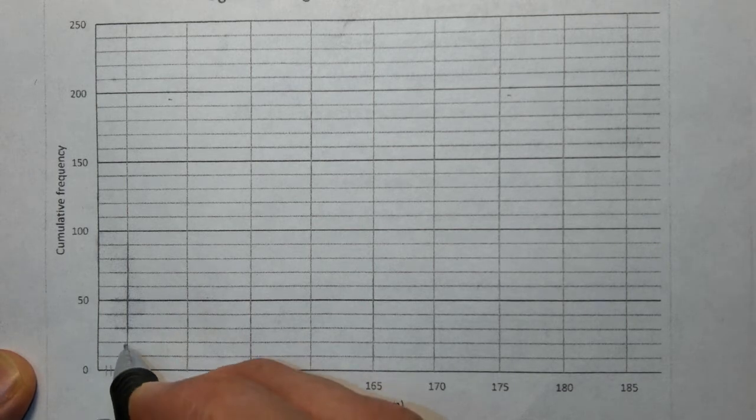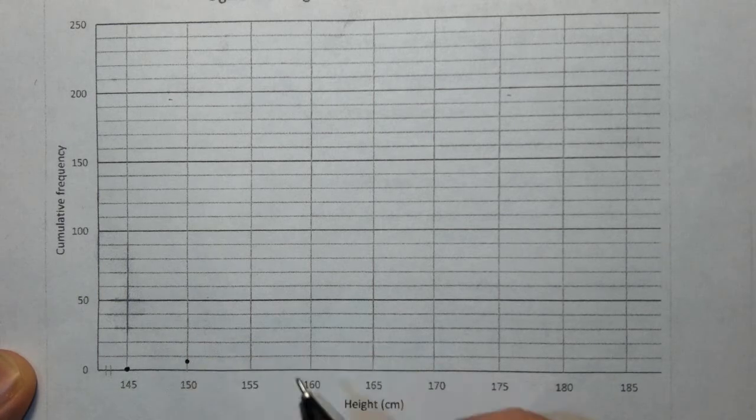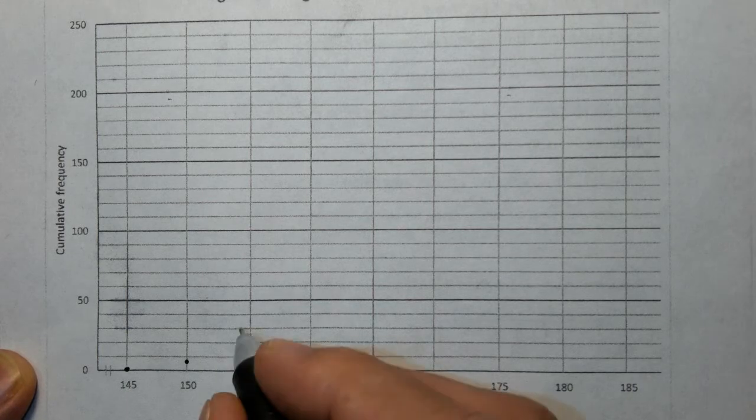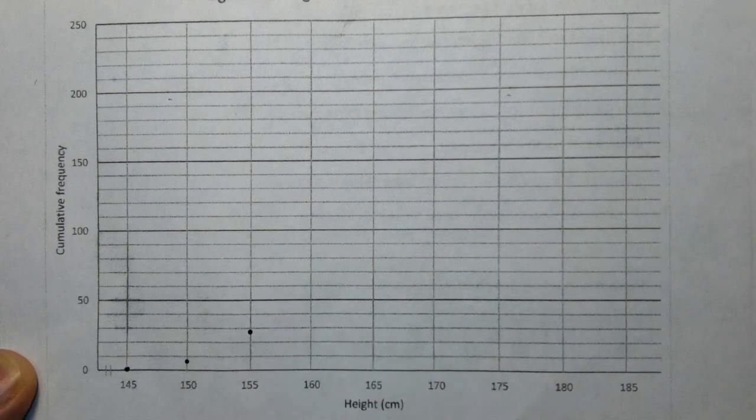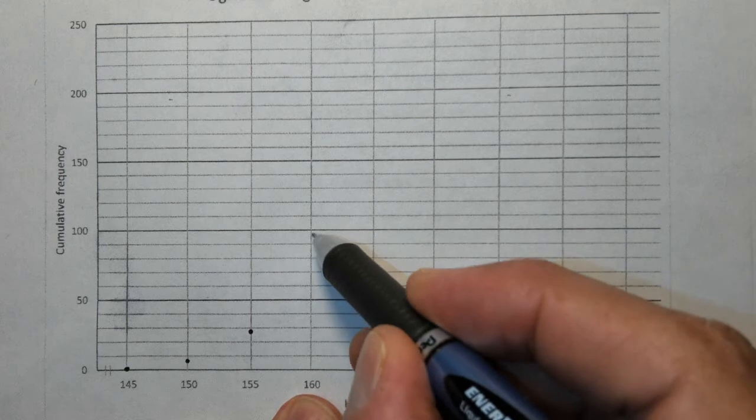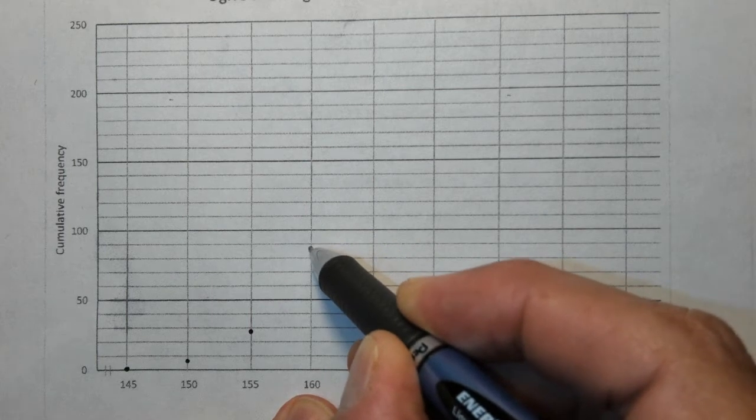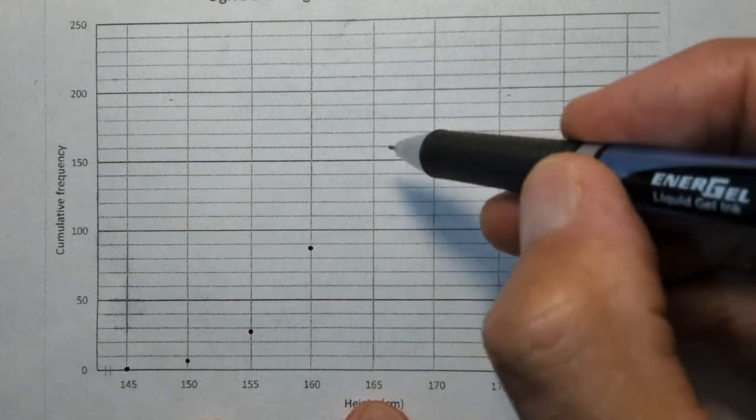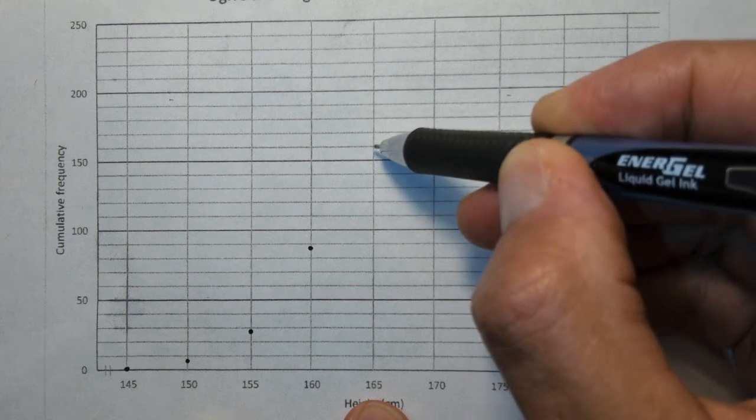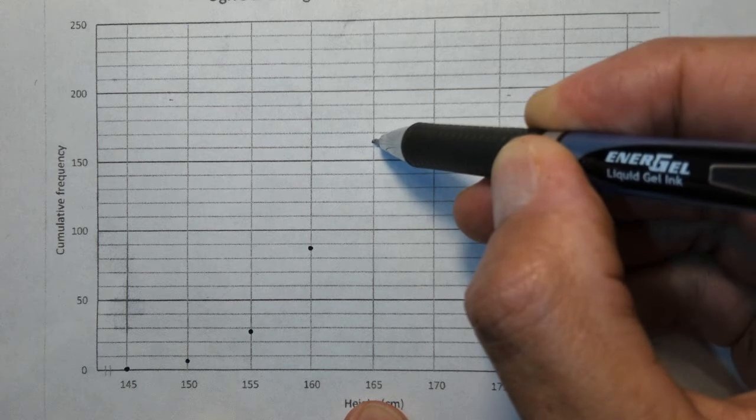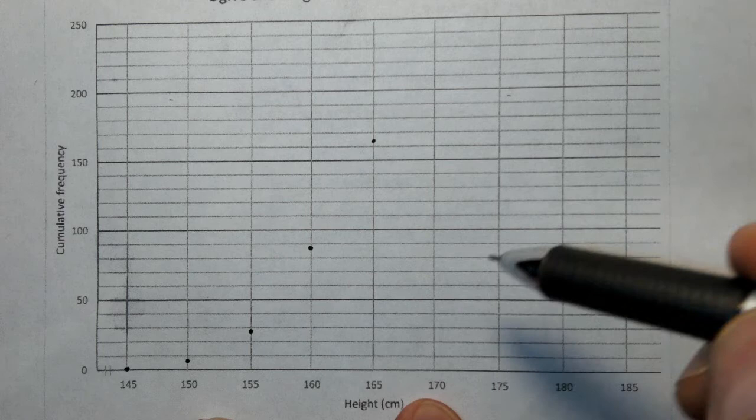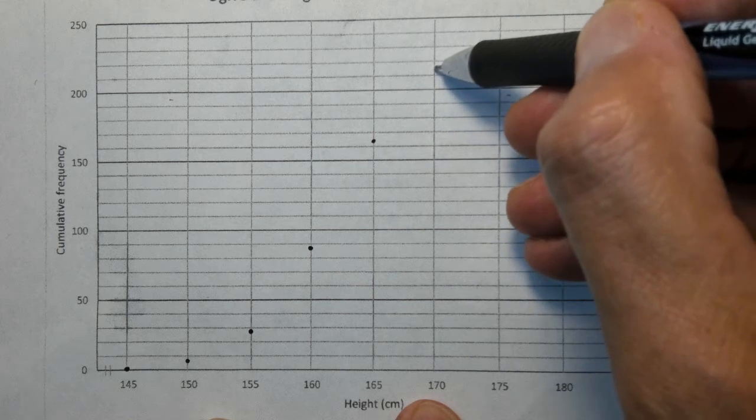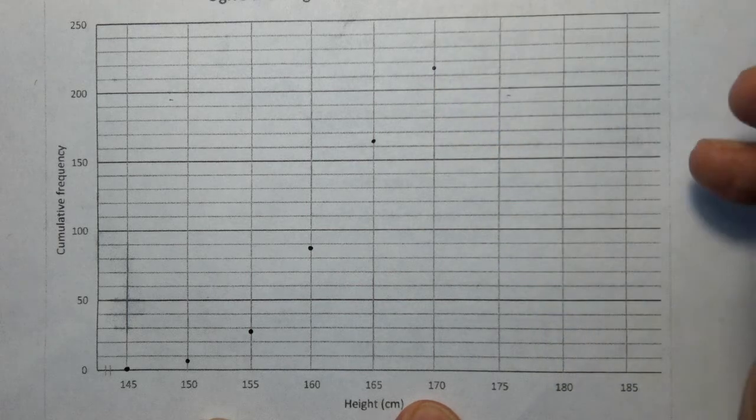145 and 0 is where we anchor. Then we go to 150, and looking at your vertical scale which goes up in 10s, 6 will approximately be just over halfway. Your next point is 155 and 29, so that's close to the 30 line. 160 and 89 is just off 90. Then 165 and 163, so we put it roughly there. 170 has a y-coordinate of 215, so we go to 210, and 215 is smack in the middle there.